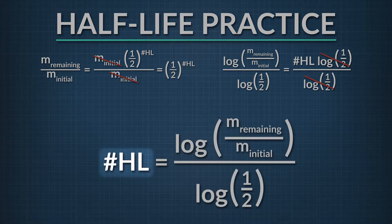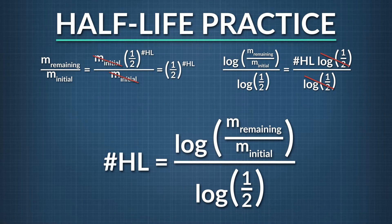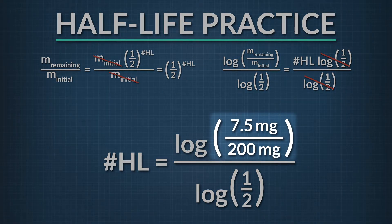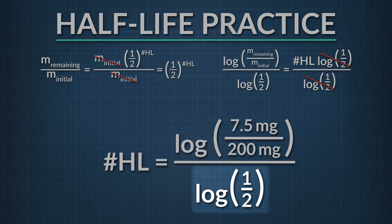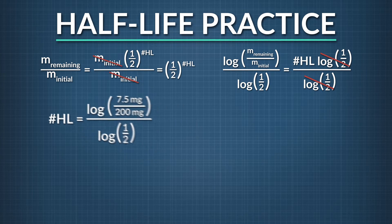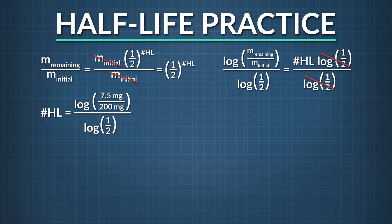The number of half-lives equals the log of the mass remaining divided by the initial mass, all divided by the log of one-half. We plug in the final mass of 7.5 milligrams and the initial mass of 200 milligrams, all divided by the log of one-half. Then we use a calculator to compute the final answer and find that the number of half-lives elapsed is equal to 4.73.